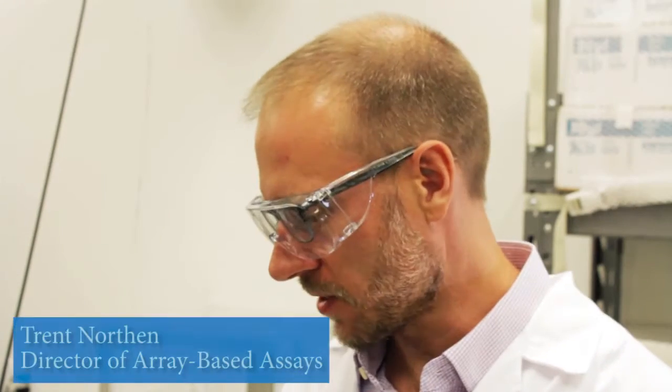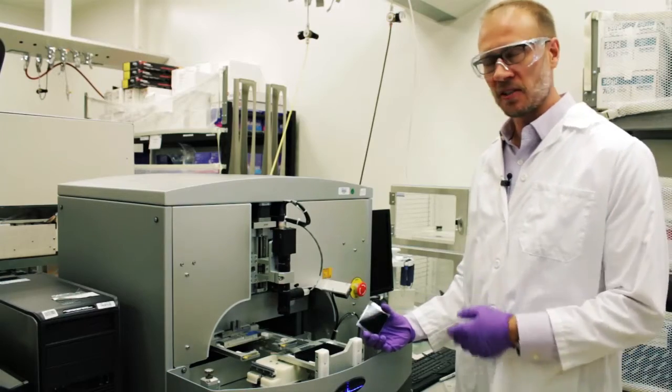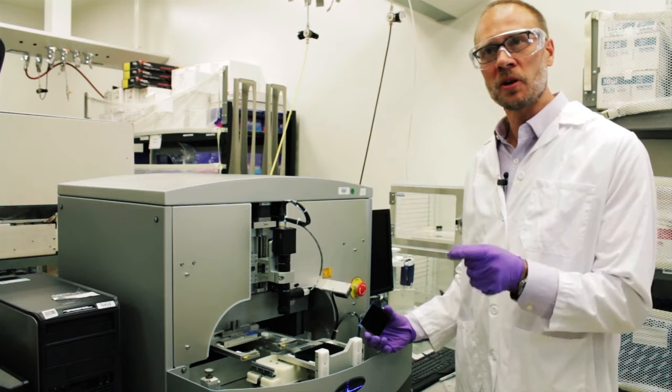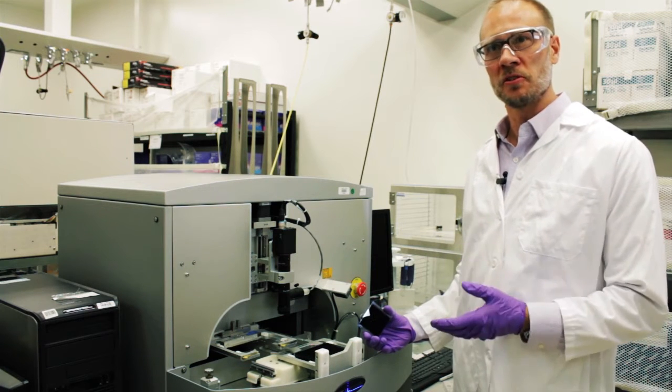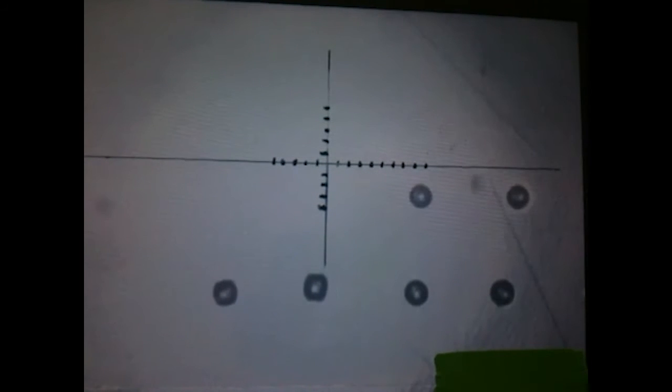At J-Bay we use an advanced mass spectrometry technique called nanostructure initiator mass spectrometry or NIMS. This allows us to read out the chemical composition of mixtures of sugars that have resulted from the hydrolysis of plant biomass.